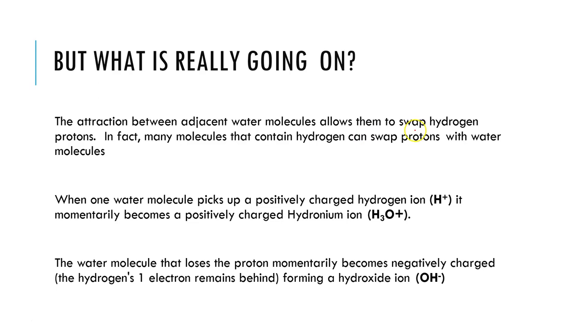So the attraction between the adjacent water molecules allows them to swap hydrogen protons. So when you have one water molecule that can bump into another, remember this is delta plus and our delta minus here, sometime the attraction, the hydrogen bonds between here, get so strong that it will actually remove one of the protons and they will swap a proton. What this does is it picks up a positively charged hydrogen ion. The hydrogen leaves its electron behind forming a H+ and then it becomes a positively charged hydronium ion. So this H+ will jump onto another water molecule forming our H3O+. So that's how our hydroniums form. And this happens in neutral water as well as acidic solutions. So what happens when this occurs is one water molecule loses a proton momentarily, becomes negatively charged forming a hydroxide ion, and one becomes positively charged forming a hydronium ion.